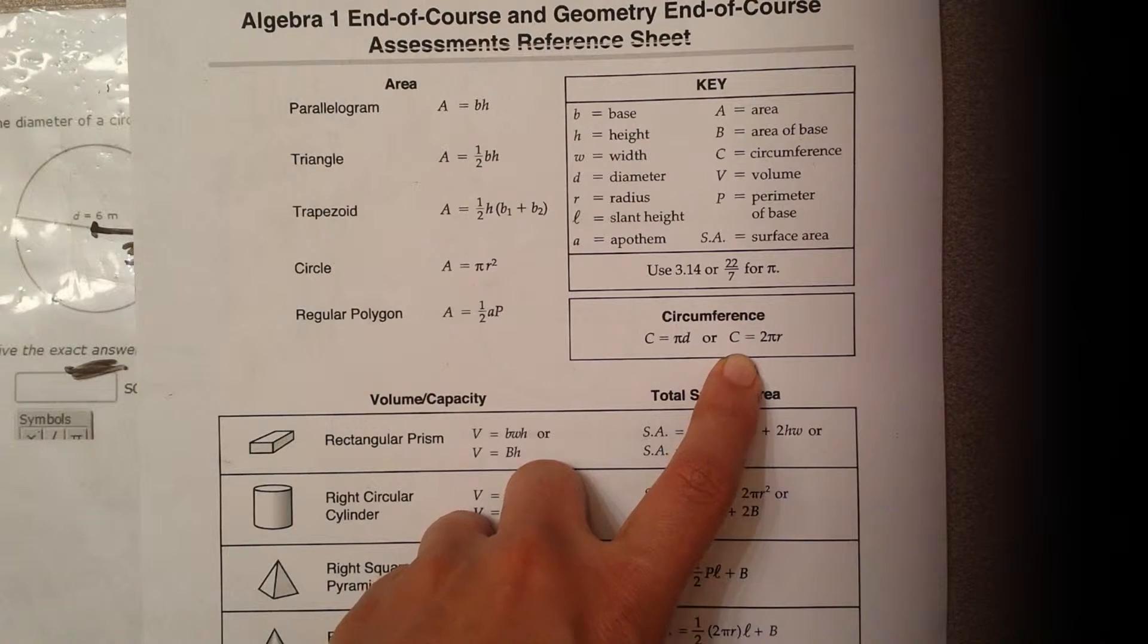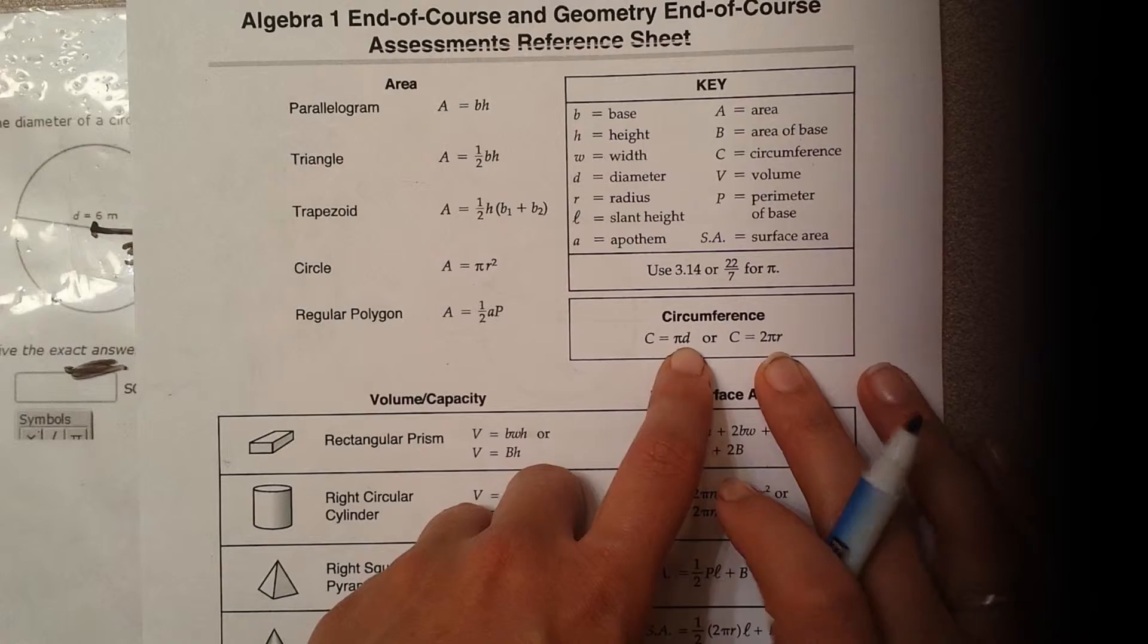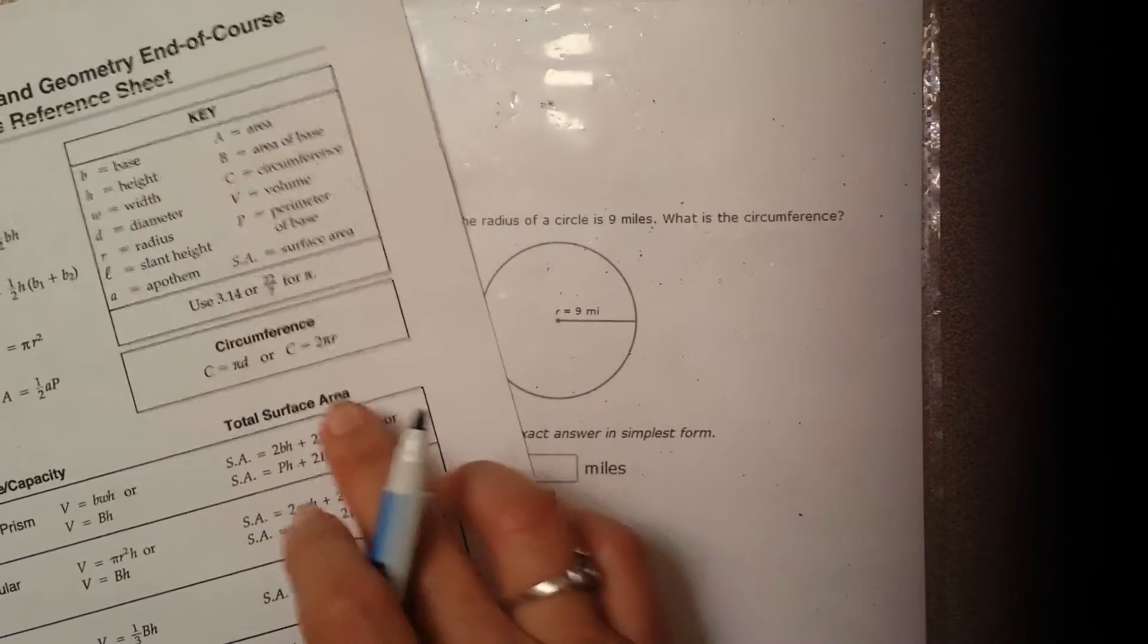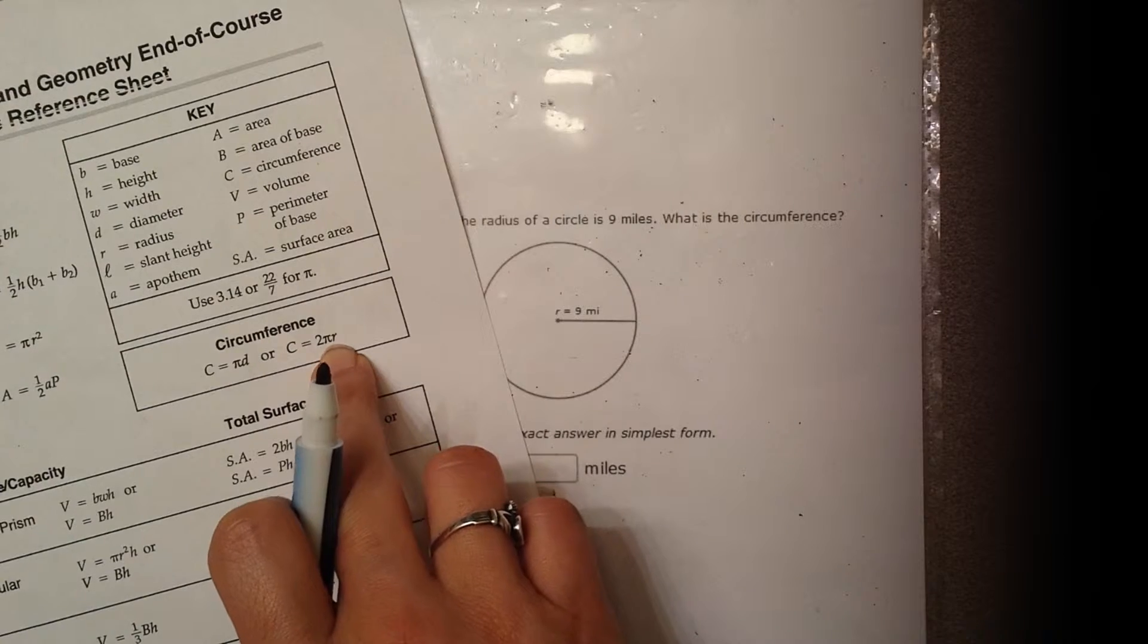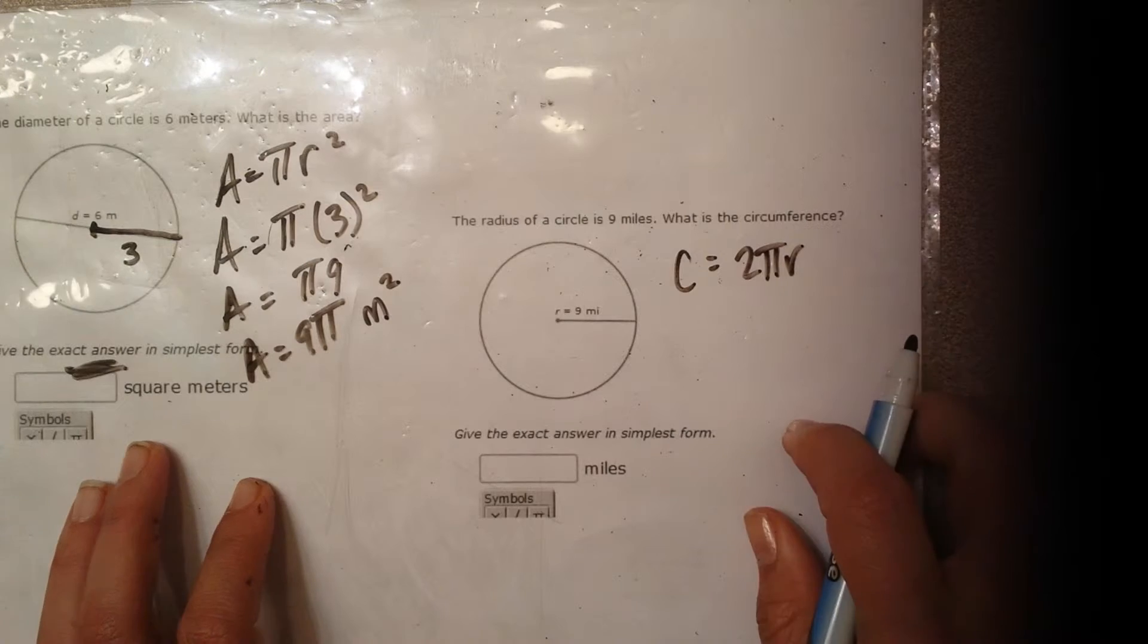So the two formulas for circumference, you decide which one to use depending on what they give you. If they give you the diameter, use that one. If they give you the radius, use this one. Okay, so in this question, they give us the radius, so we're going to use the one with r because r is radius.